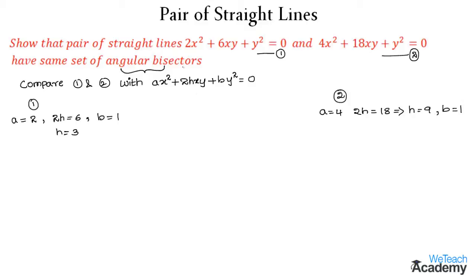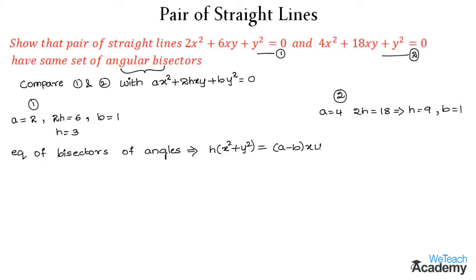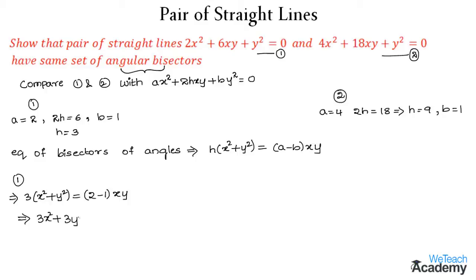We already know that the equation of bisectors of angles is given by the formula: h(x² + y²) = (a − b)xy. Let us use this formula to find the equation of bisectors for equation 1. Substituting the values, we get 3(x² + y²) = (2 − 1)xy, which simplifies to 3x² + 3y² = xy.